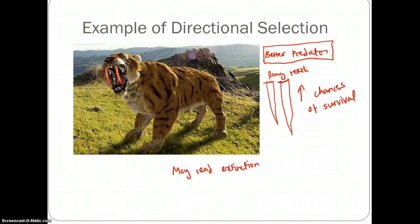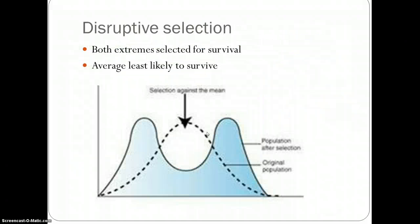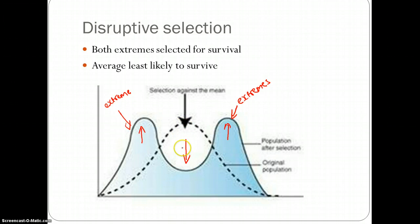The next type of natural selection is disruptive selection. If we take a look at the graph, we can see right here that the extremes are selected for. Therefore, we see that the chances of survival is greatest in the extremes, and the average does not have a large chance of survival. So disruptive selection is a type of natural selection in which extremes are selected for survival and the average is least likely to survive.